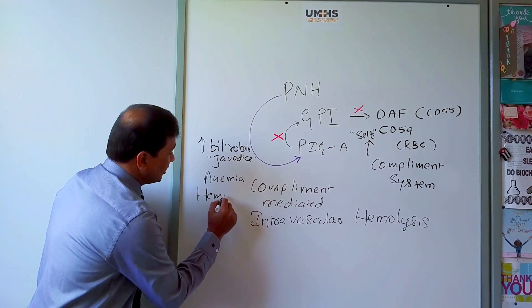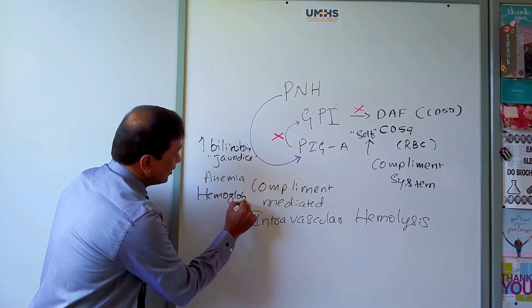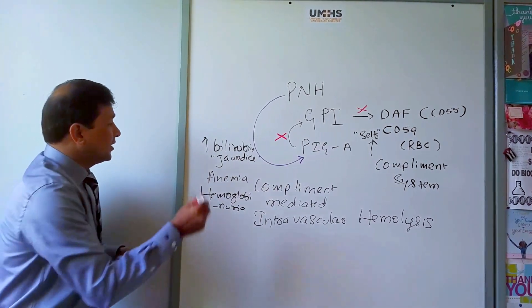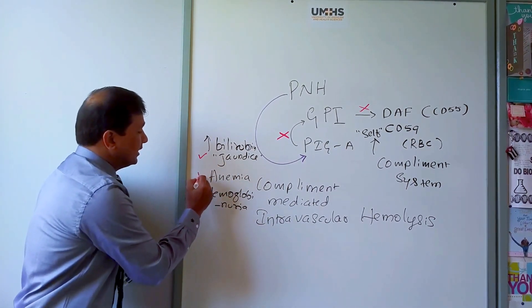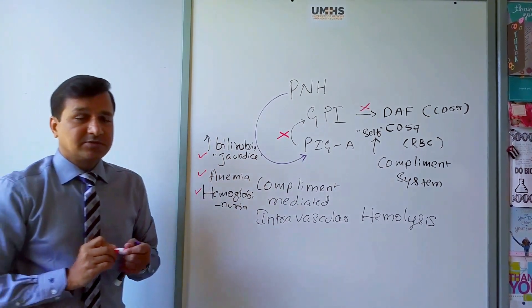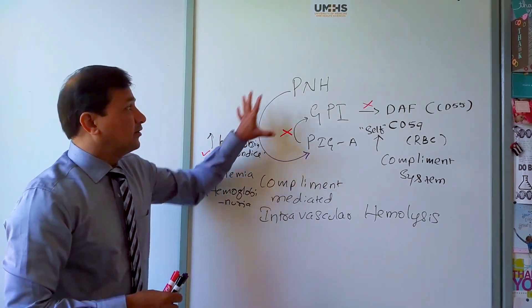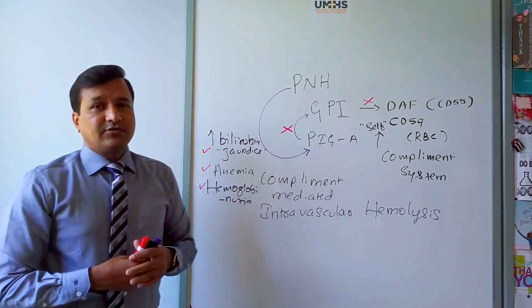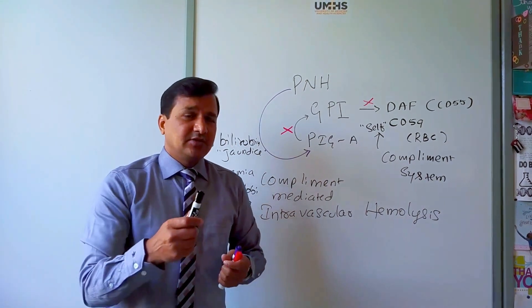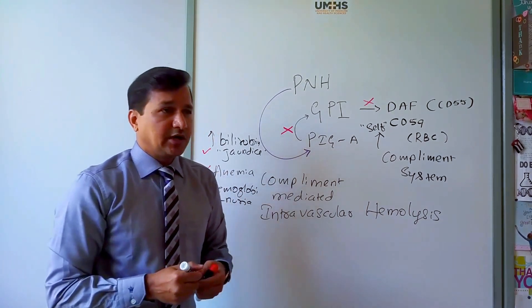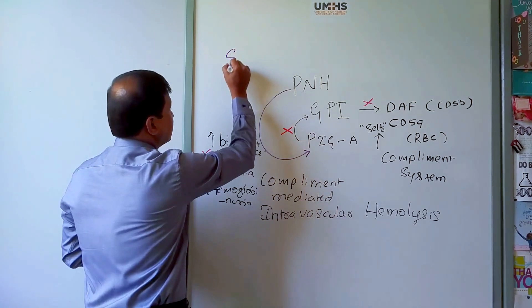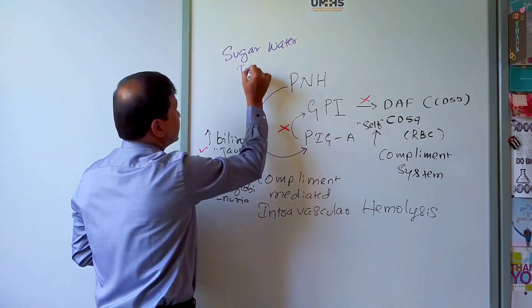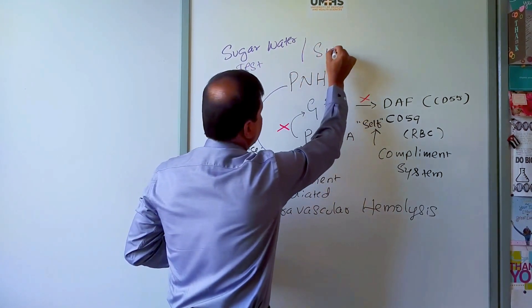Hemoglobinuria, especially in the morning, is a classic sign of PNH. The three key signs are jaundice, anemia, and hemoglobinuria. For diagnosis, the screening test used is the sugar water test, also called the sucrose hemolysis test.